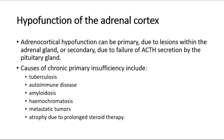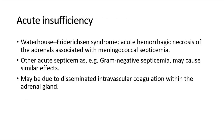Adrenocortical hypofunction can be primary, due to lesions within the adrenal gland, or secondary, due to failure of ACTH secretion by the pituitary gland. Causes of chronic primary insufficiency include tuberculosis, autoimmune disease, amyloidosis, hemochromatosis, metastatic tumors, and atrophy due to prolonged steroid therapy. For acute insufficiency, Waterhouse-Friderichsen syndrome is an acute hemorrhagic necrosis of the adrenals associated with meningococcal septicemia. Other acute septicemias, like gram-negative septicemia, may cause similar effects, possibly due to disseminated intravascular coagulation within the adrenal gland.